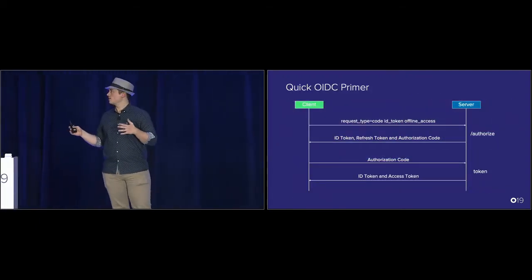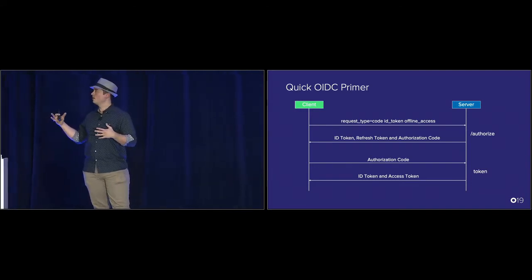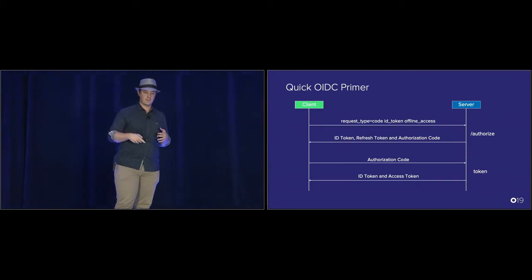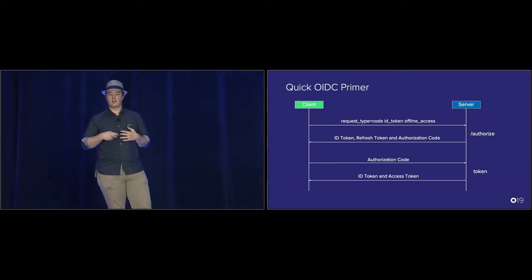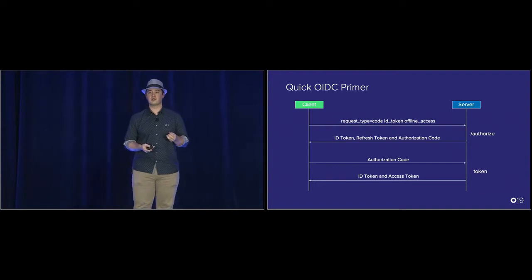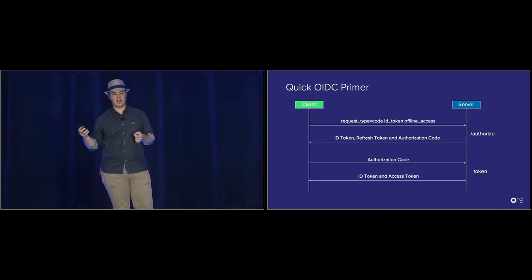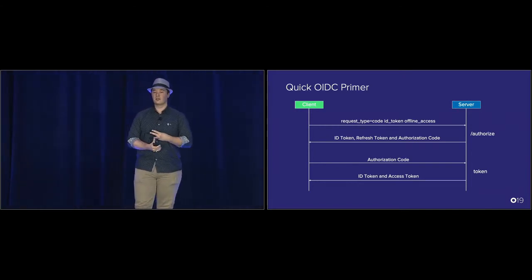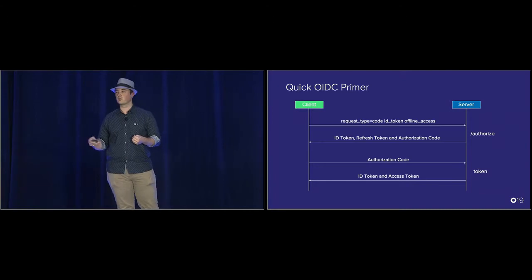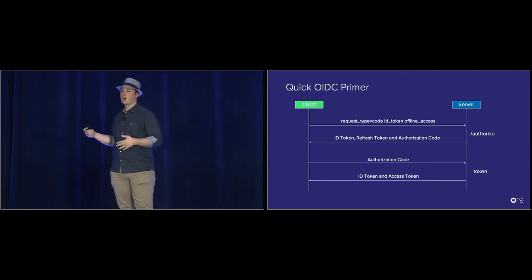I'm not going to go into OIDC in depth, but some of you may not be familiar with the flow. In a common use case, the client talks to the server requesting a code, an ID token, and offline access. Offline access is especially common in mobile because you don't want to prompt username and password every single time. The server endpoint returns the ID token, refresh token, and authorization code. You then go to a token endpoint and use that authorization code to get another ID token and access token. This is a very common OIDC flow.